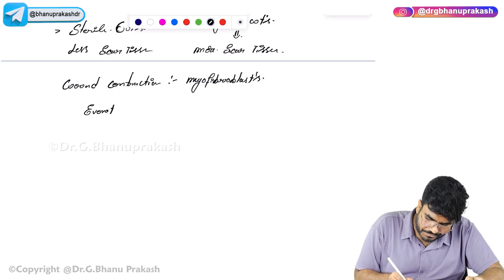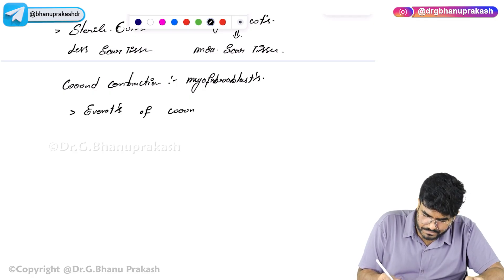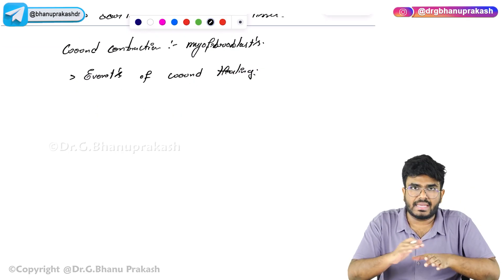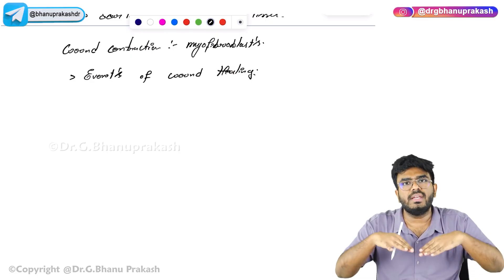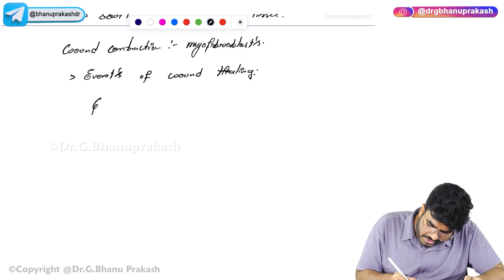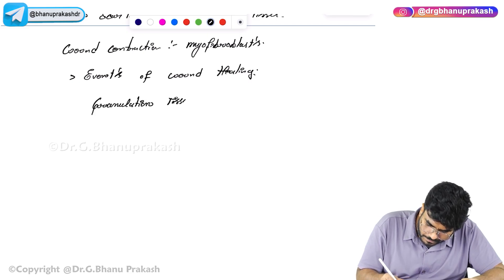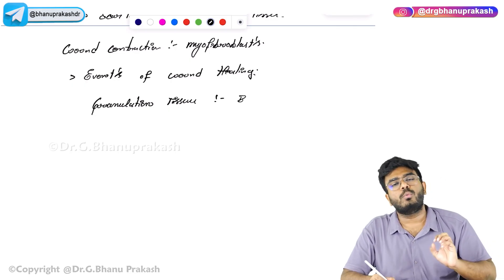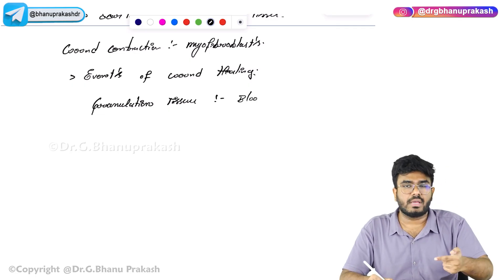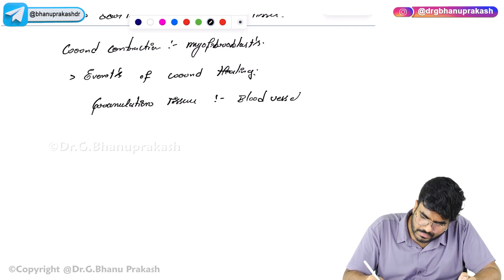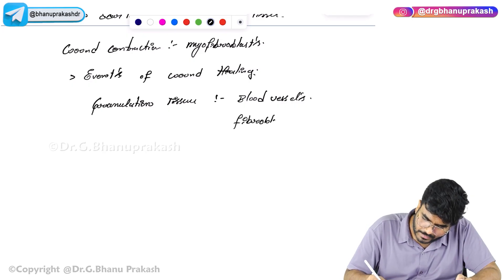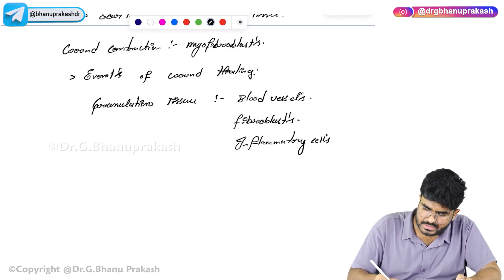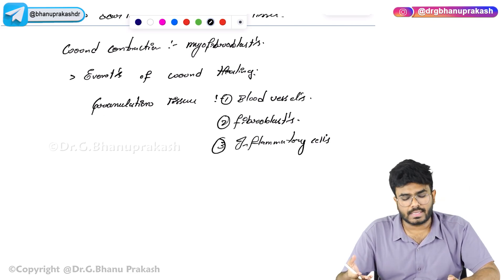Next topic: events of wound healing. First, granulation tissue will be deposited in the area of the wound — to fill the empty space. Granulation tissue consists of blood vessels (small blood vessels coming into that area), fibroblasts, and inflammatory cells. These three are present in the granulation tissue.